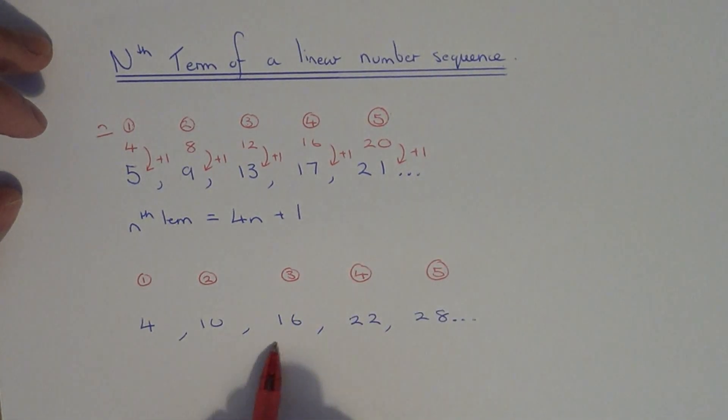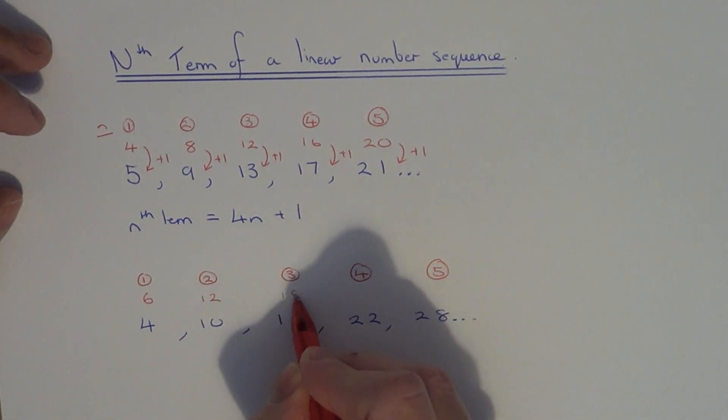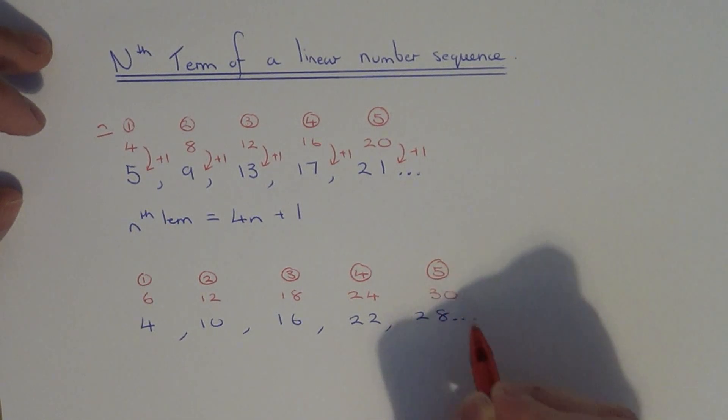Next figure out what the sequence is increasing by each time. As you can see you're adding on 6. So what I'm going to do is write down my multiples of 6. So we've got 6, 12, 18, 24, 30.